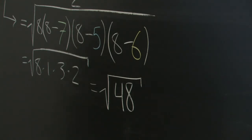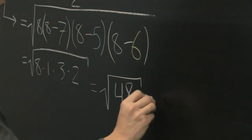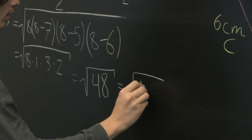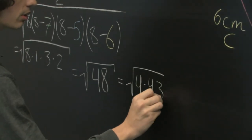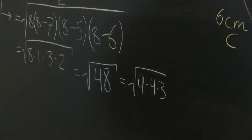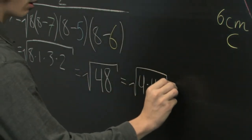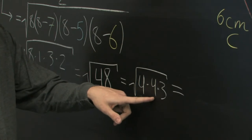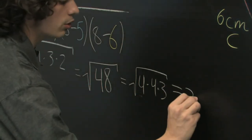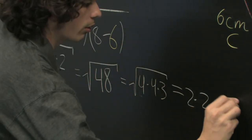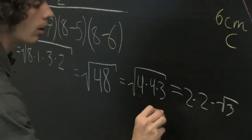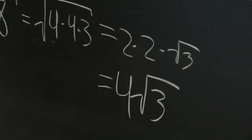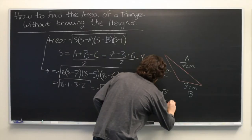Which we can rewrite as the square root of 4 times 4 times 3. Square root of 4 is 2, we can pull that out. This becomes 2 times 2 times square root of 3, which equals 4 root 3. And of course this is in square centimeters.